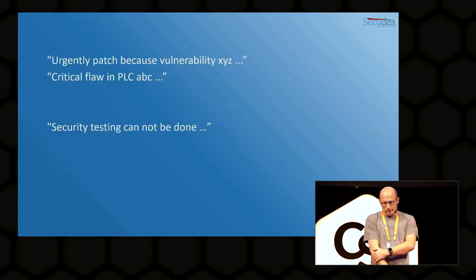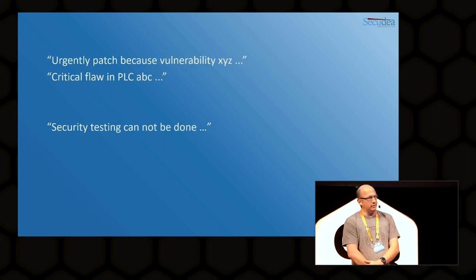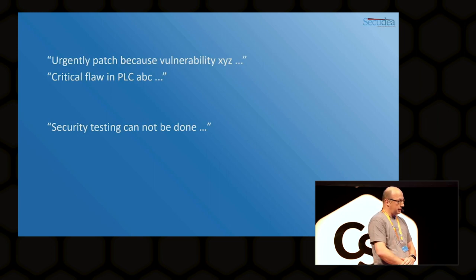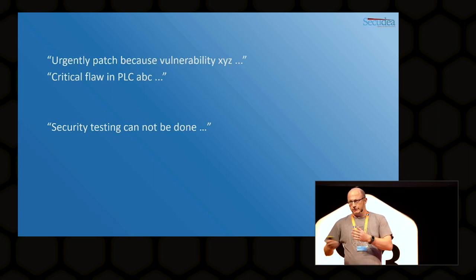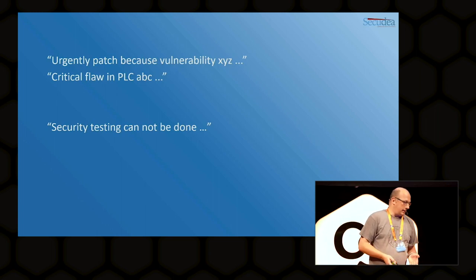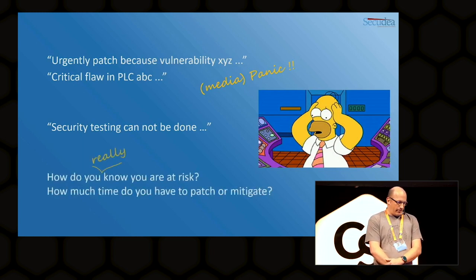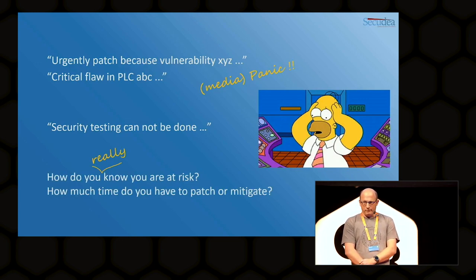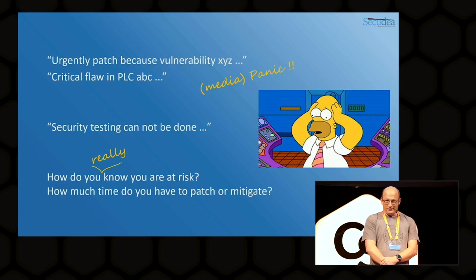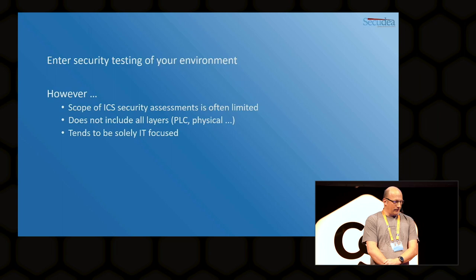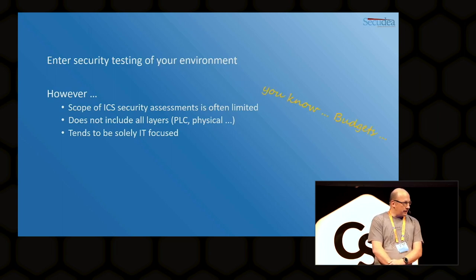The things I will present today are real stuff that occurred in real environments. You've all heard the news that there's urgent patching to be done because of vulnerability XYZ, there's a critical flaw in a PLC, or security testing cannot be done — which almost always causes media panic. So how do you really know you're at risk? And how much time do you have to patch or mitigate? Nobody has an answer, so enter security testing of your environment.